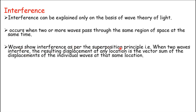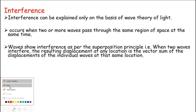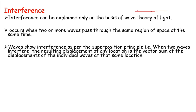Waves show interference as per the superposition principle. The superposition principle states that when two waves interfere, the resulting displacement at any location is the vector sum of the displacements of the individual waves at the same location. For example, at a point where both waves are at zero displacement, the vector sum is also zero.